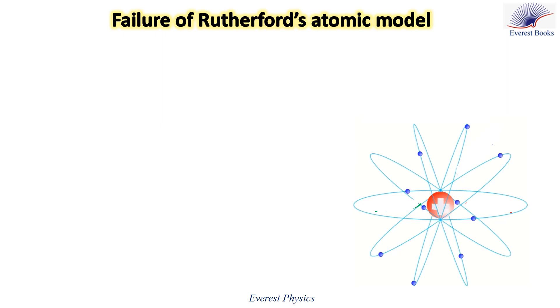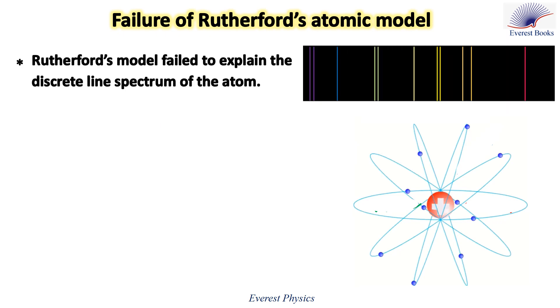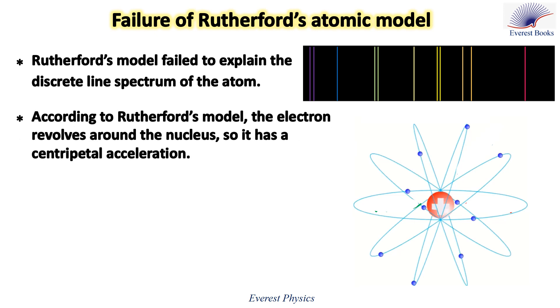Let's discuss the failure of Rutherford's atomic model. First, Rutherford's model failed to explain the discrete line spectrum of the atom. Second, according to Rutherford's model, the electron revolves around the nucleus, so it has a centripetal acceleration.